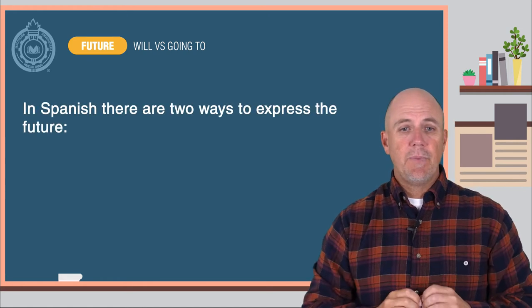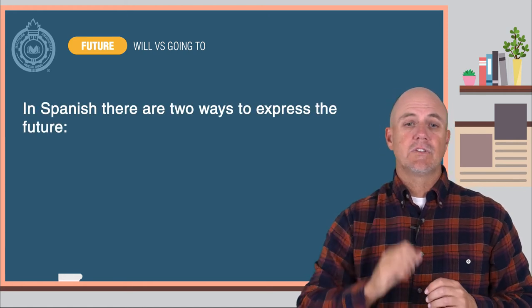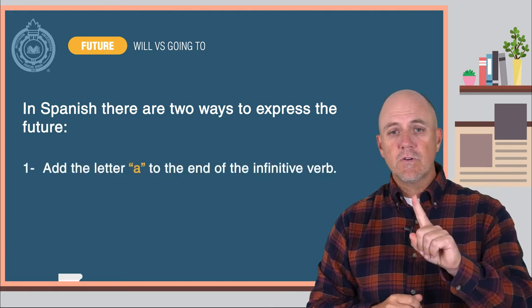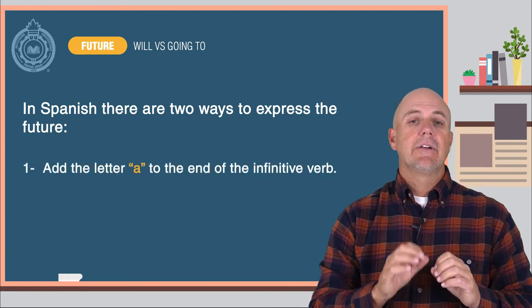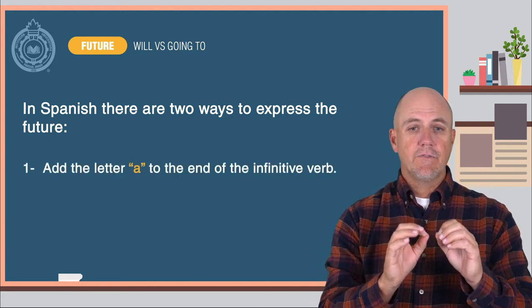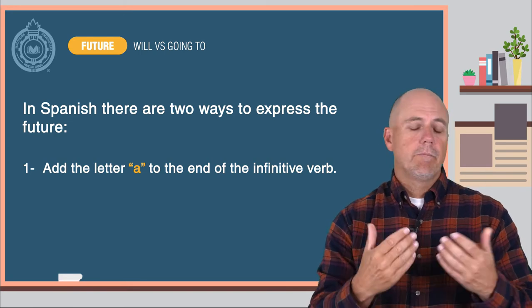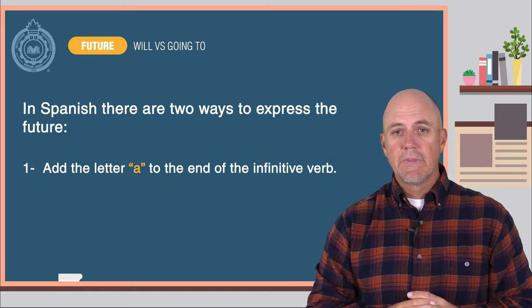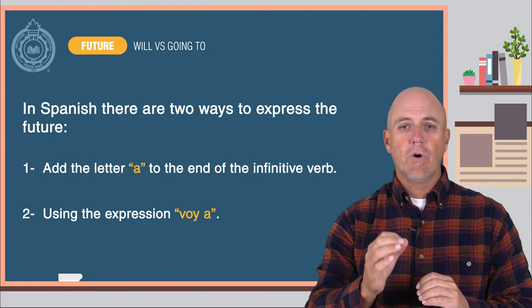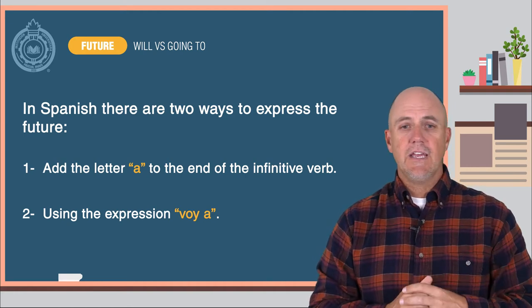As you can tell, in Spanish, there are two ways to express the future. The first way is to add the letter A to the end of the infinitive verb, or the equivalent conjugation. The second way is by using the expression voy a, or a similar conjugation.